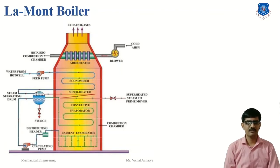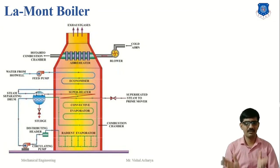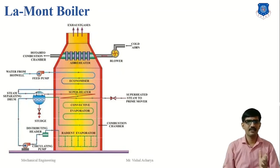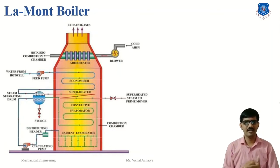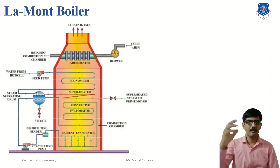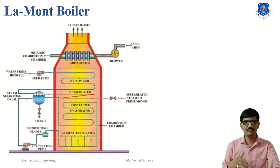The working pressure of the Lamont boiler is 170 bar, temperature is 773 Kelvin, and capacity is 50 tons per hour. Advantages include: easy to start, high steam generating capacity of 15 tons per hour, high heat transfer rate, can be reassembled with natural circulation boilers, and simple design. The main disadvantage is bubble formation at the surface of the tube, which reduces the heat transfer rate to the steam.